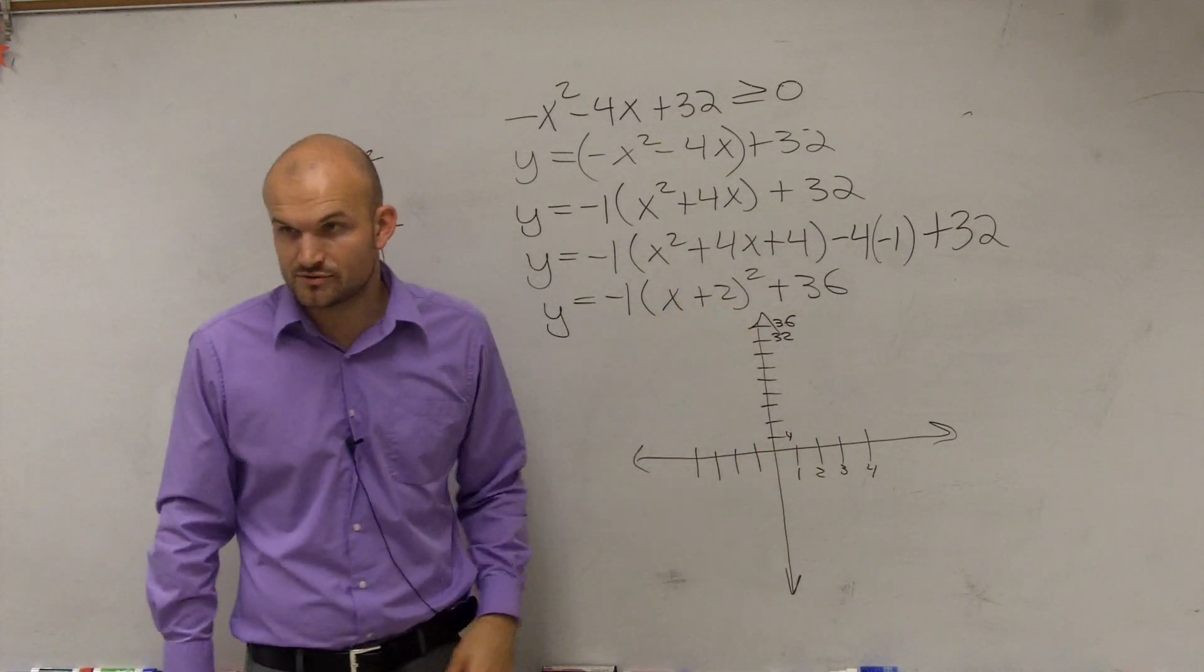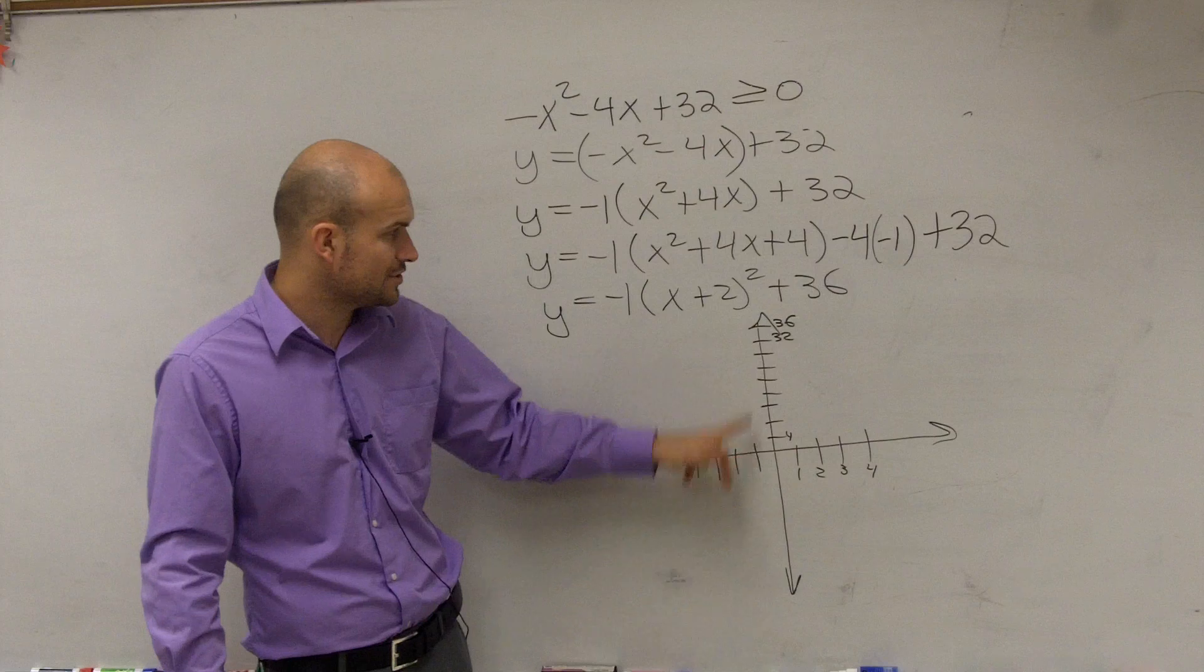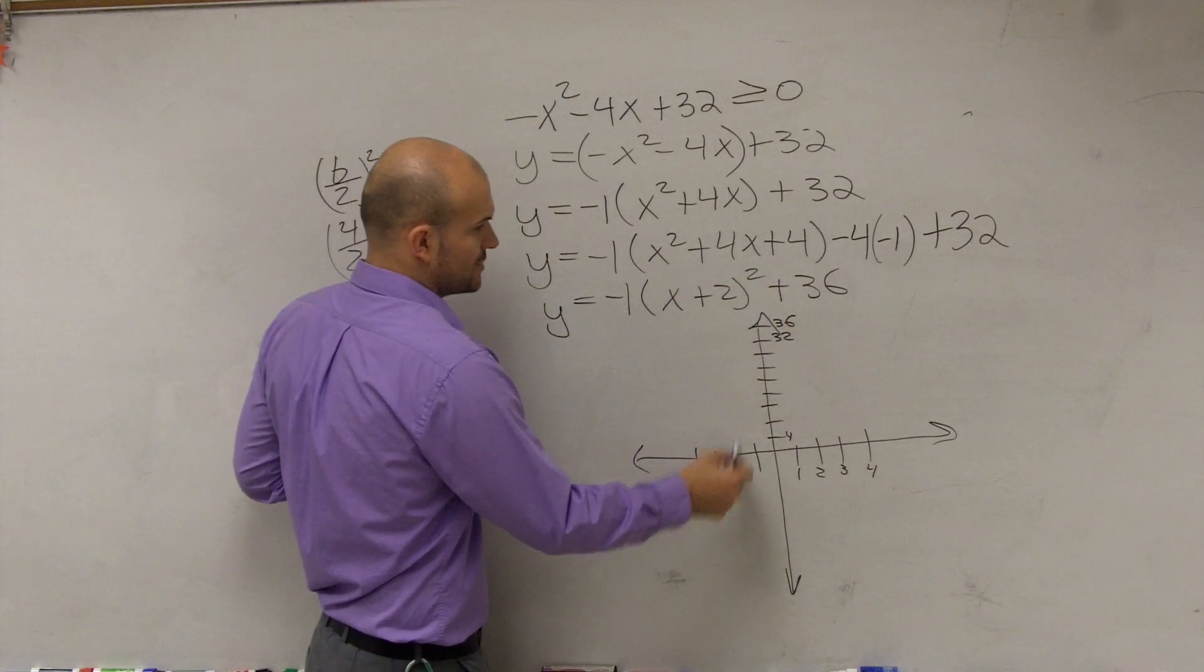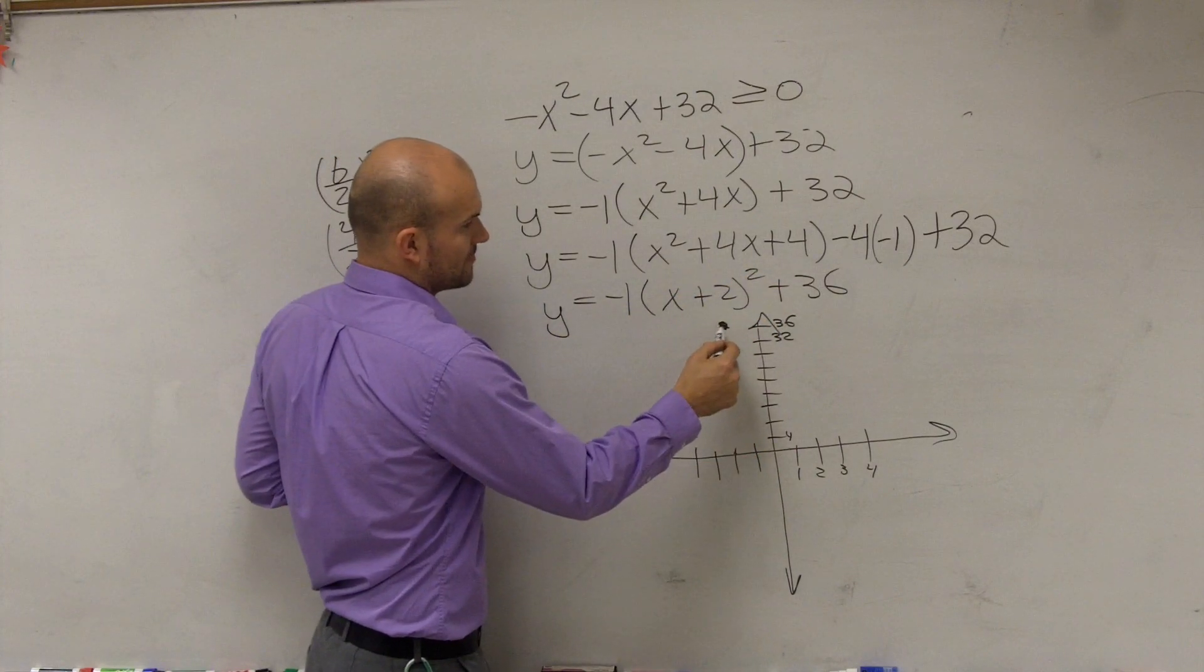So ladies and gentlemen, we can find the vertex. Our vertex is at negative 2, 36. So negative 2 all the way up to 36. That's the vertex.